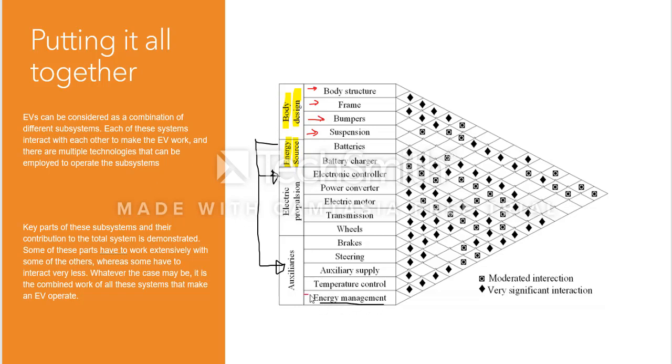Apart from the energy source, you have your steering wheel, which includes the electronic controller, power converter, electric motor, transmission, and vehicle wheels. You can see that this symbol represents very significant interaction between the battery and the vehicle itself.